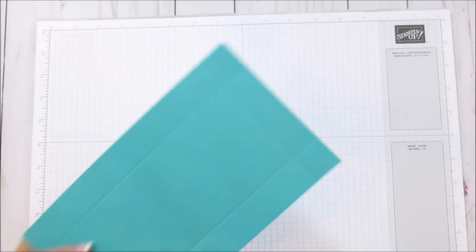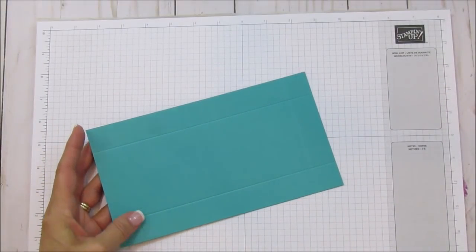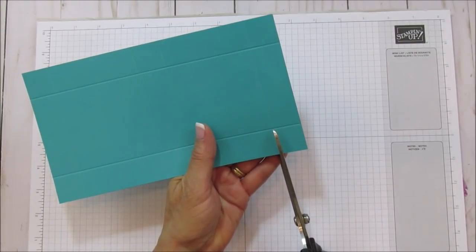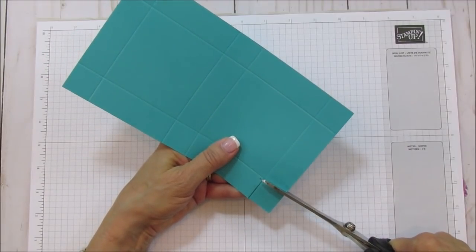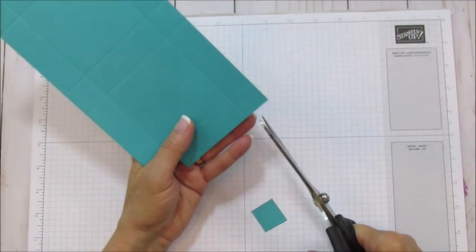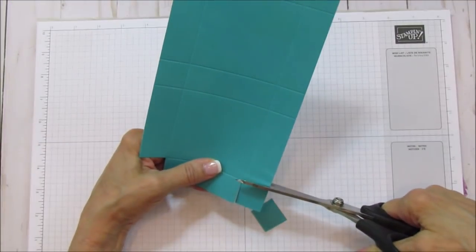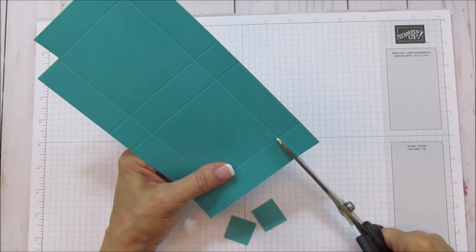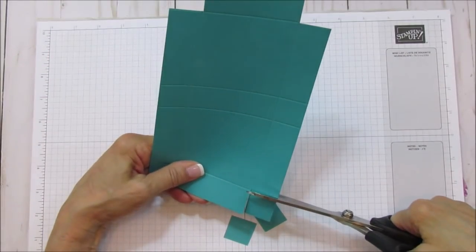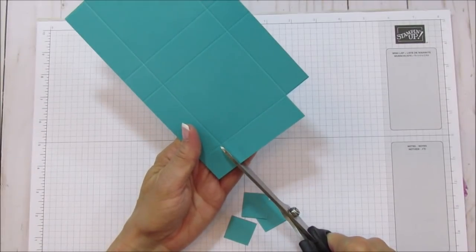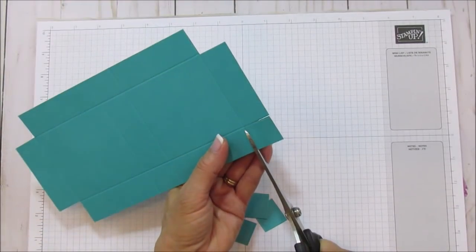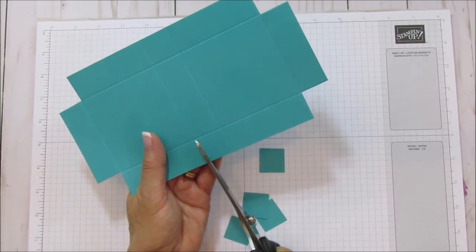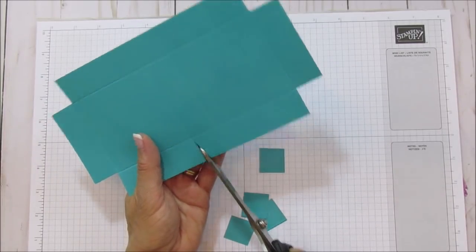These go together very quick and easy, which you need if you're going to make a bunch. We are going to cut off all of these four corners on the other end also.